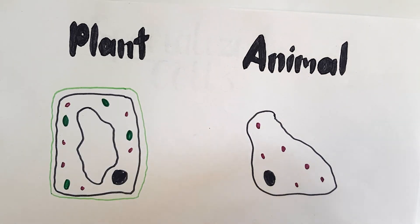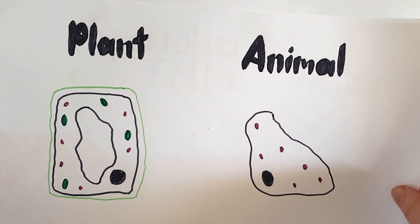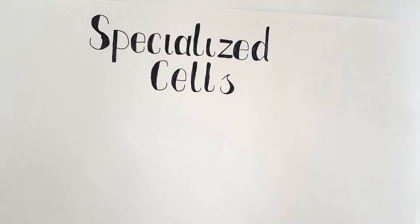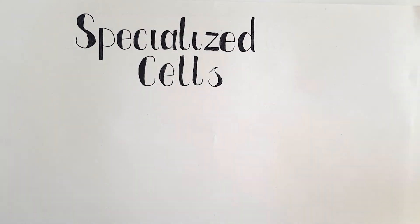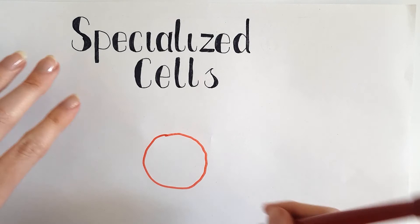Not all cells follow this basic structure and shape. Cells, just like organelles, can be highly specialised to do certain jobs. The first one is this cool round disc. This is a red blood cell.